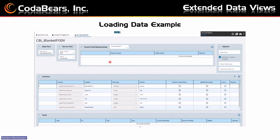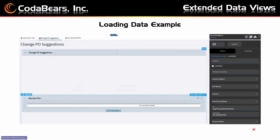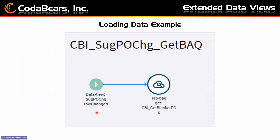It pulls the columns in automatically — that's what that looks like. Then I added a panel card grid and bound that grid to the new data view I had just created, so it knows that's where the data is going to show up. Then I created an event — my trigger was simply the row changing in that suggestion PO change. Row changed just means pressing from one row to another. I used the ERP BAQ function, and I'll show you what the properties were.